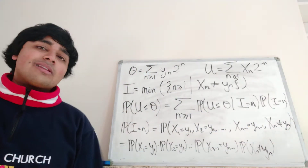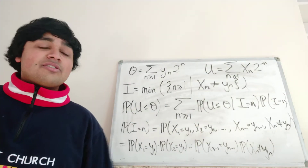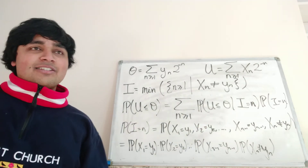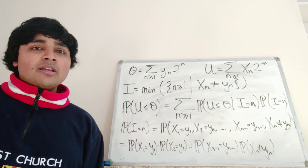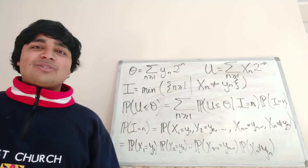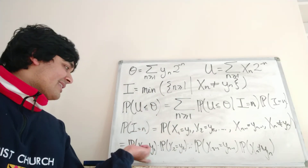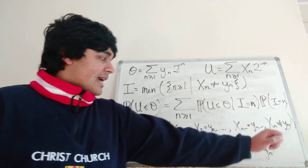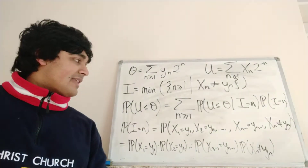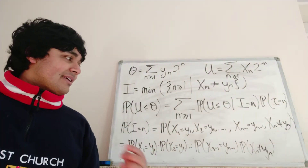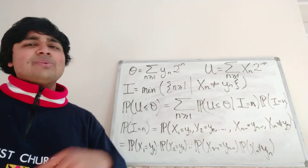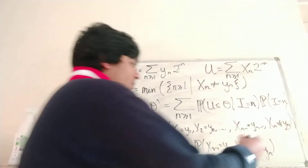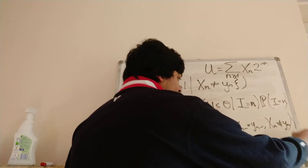What is the probability that X_1 equals y_1? Since y_1 is a constant that is either 0 or 1, and X_1 has a Bernoulli(1/2) distribution, in either case the probability is one-half. The same holds for all terms up to X_{n-1} equals y_{n-1}. The probability that X_n does not equal y_n is also one-half, by the same reasoning. So each factor in the product is one-half, giving the probability that I equals n equals (1/2)^n, which is 2 to the minus n.